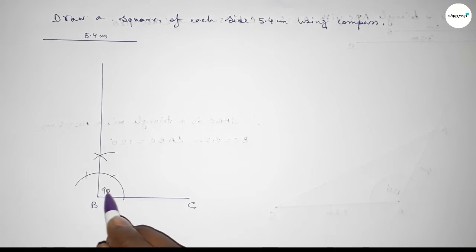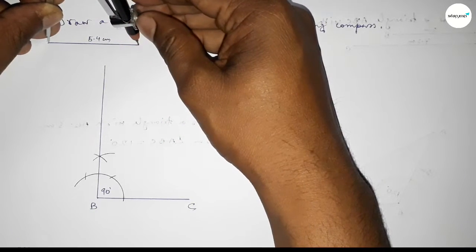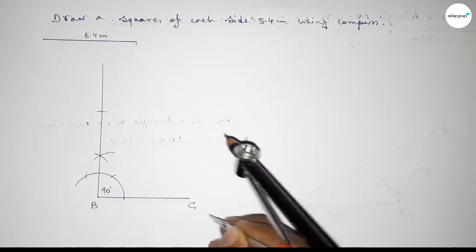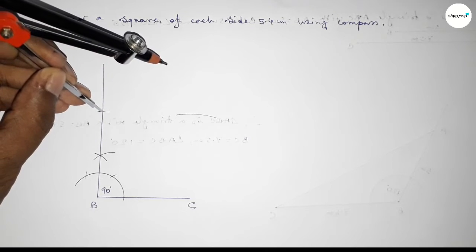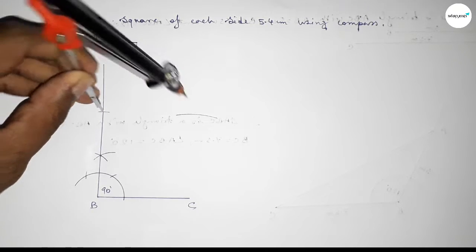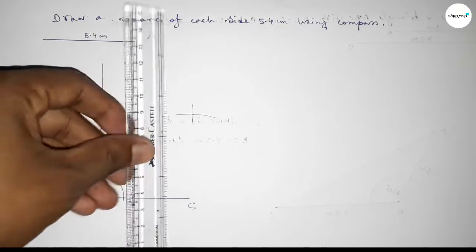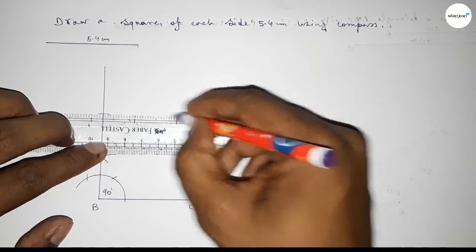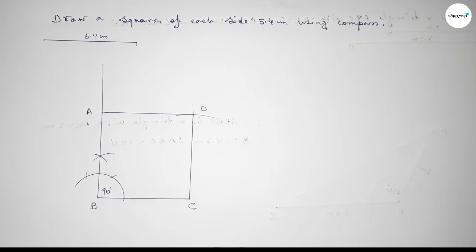Now take the length 5.4 centimeters using the compass. Place the compass on point B and cut an arc along the perpendicular. With the same length, place the compass and cut again so both curves intersect at a point. Join the sides — labeling the new points A and D — to complete the square.